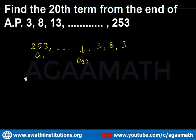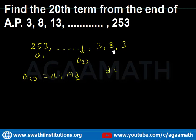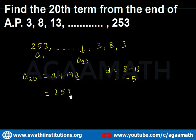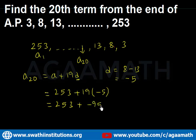We need to find a20 from the reversed sequence. So a20 = a + 19d. In the reversed AP, a equals 253. The common difference d = 8 minus 13 = negative 5. So a20 = 253 + 19 times (negative 5) = 253 + (minus 95).